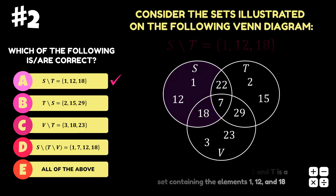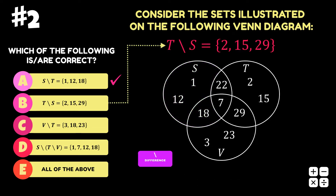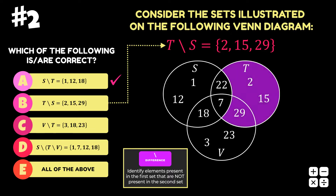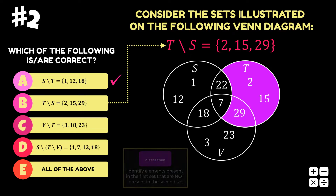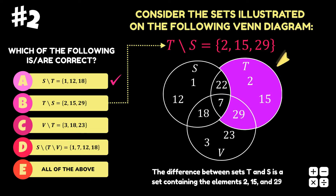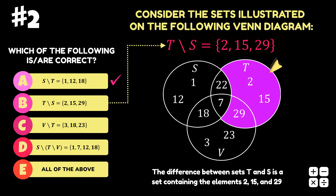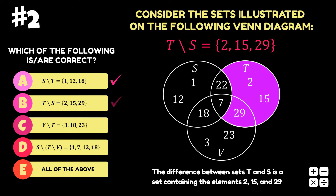Option B is the difference between sets T and S. Looking at the Venn diagram, the difference between sets T and S is the area occupied by set T that is not occupied by set S. Hence, the elements in set T that are not in set S are 2, 15, and 29. Therefore, option B is correct.